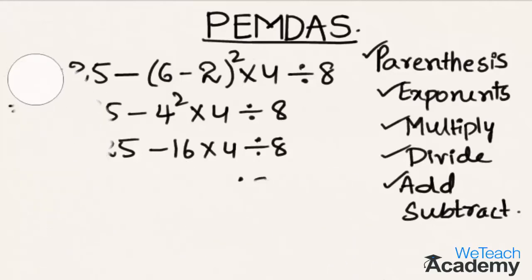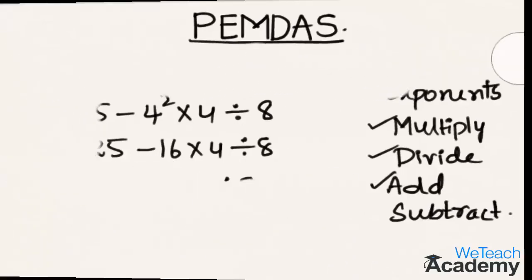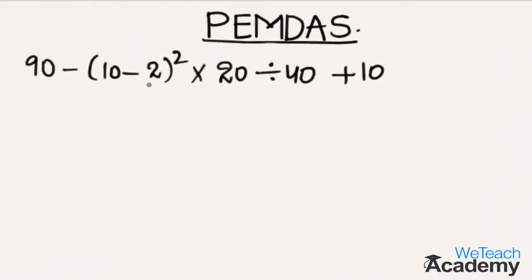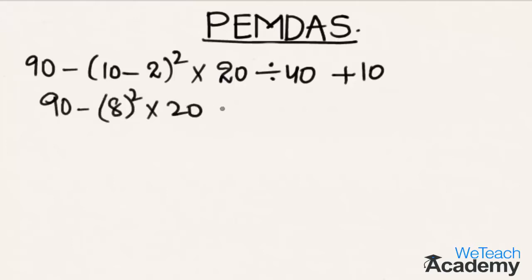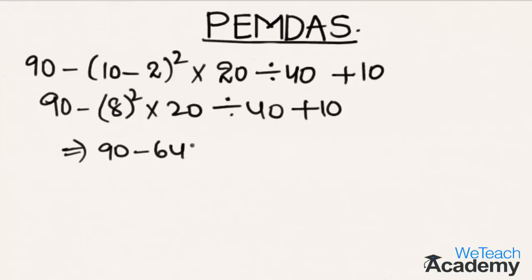Now let us solve one more expression using the same concept. In our next expression we have multiple operations and an exponent term. First, solving the terms enclosed in parenthesis, we get 90 minus — 10 minus 2 is 8 — so 8 squared times 20 divided by 40 plus 10. Next, solving the exponent term, 8 squared is 64, giving us 90 minus 64 times 20 divided by 40 plus 10.